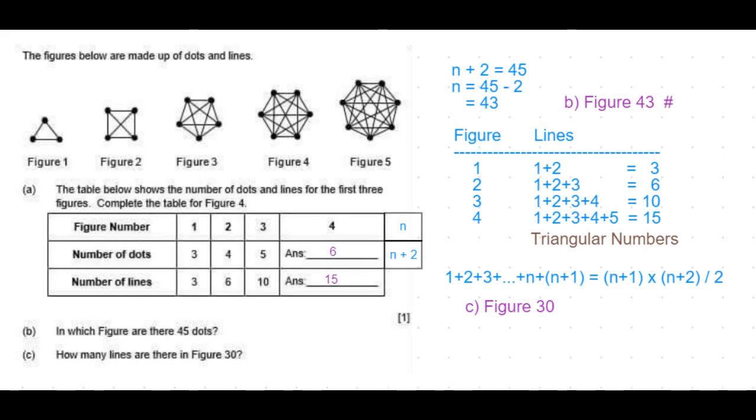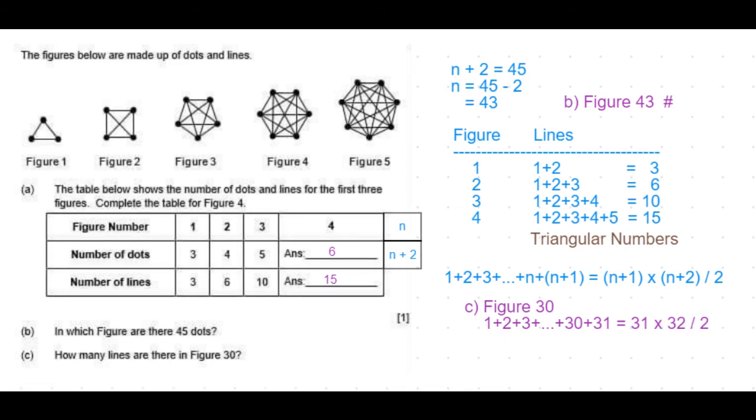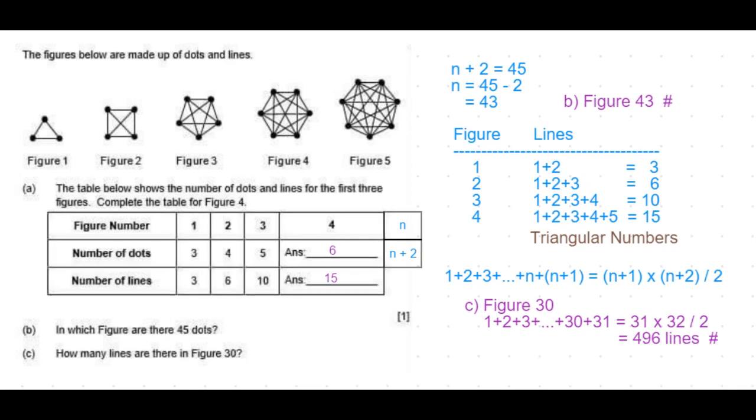In this case for figure 30 we add up from 1 plus 2 plus 3 until plus 31, which equals 31 times 32 divided by 2, which equals 496 lines. That's the answer to part C of the question.